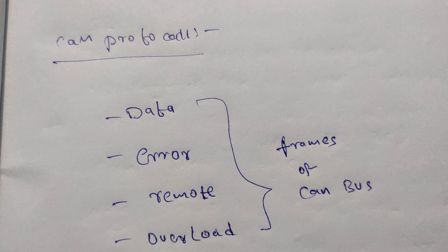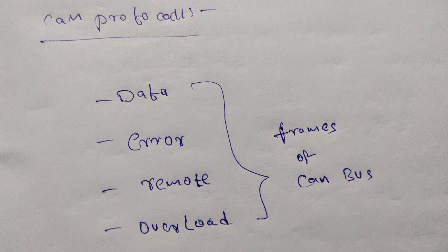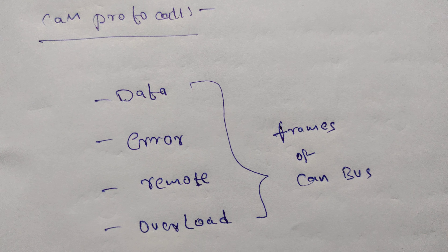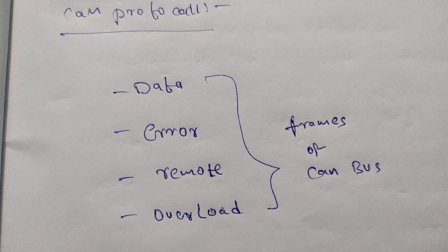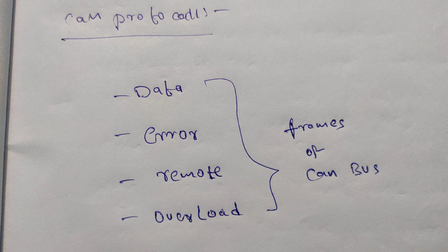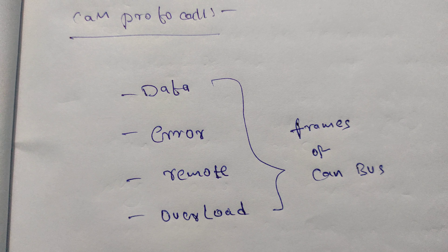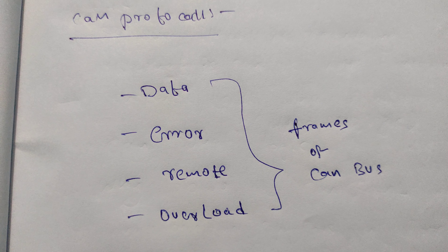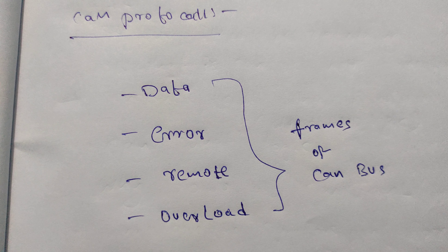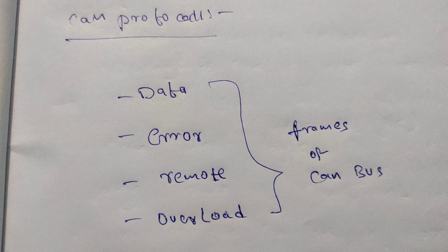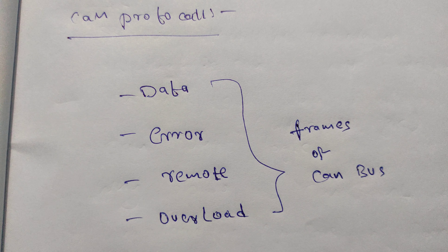Hello all, this is about CAN protocol. What are the different types of data frames available inside the CAN protocol? They are: data frame, error frames, remote frames, and overload frame.